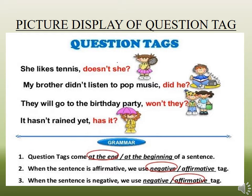The second sentence is 'My brother didn't listen to pop music.' This is a negative sentence because 'did not' is used, so the question tag will be positive: 'did he?' The third example is 'They will go to the birthday party.' This is an affirmative declarative sentence, so we use the negative question tag: 'won't they?' — for 'will' we use 'won't,' and since the prior sentence was positive, we use 'not' in the tag.